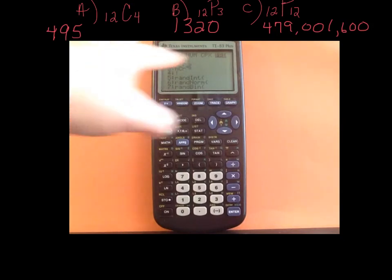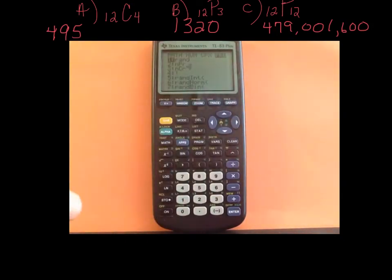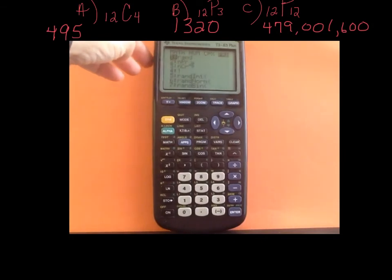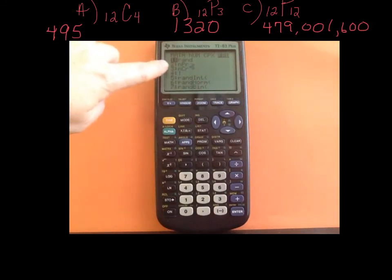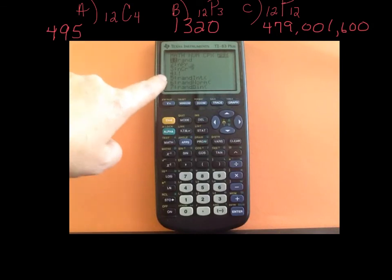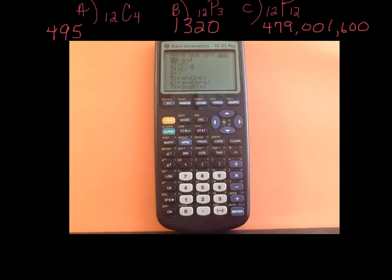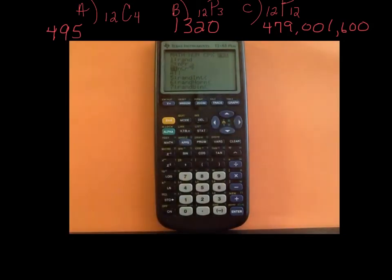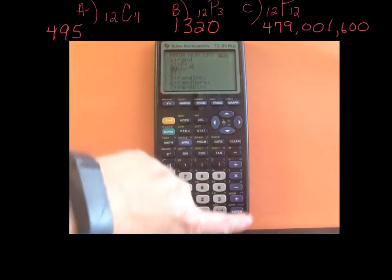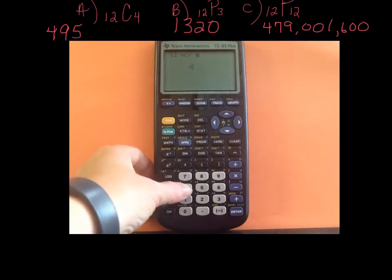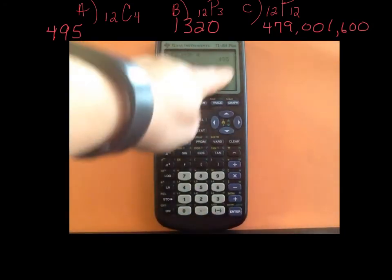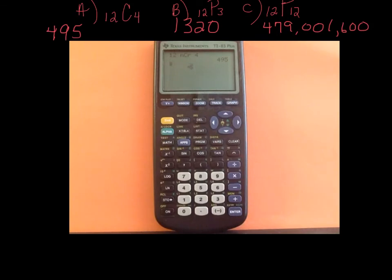PRB stands for probability, so scroll over to get to those probability functions. You can see the choice numbers: number two says NPR, number three says NCR, and then there's the factorial which you can also use. Part A was a combination, so scroll down to NCR. Remember you had to put in 12 first — now select NCR and give your calculator the R value, which for part A was four. Hit enter, and there's the 495, which was the answer we got for part A.